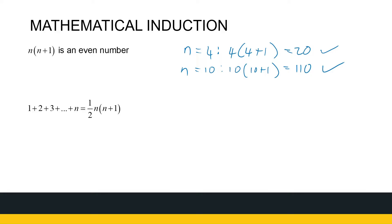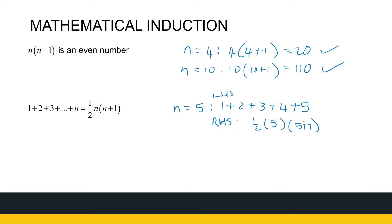If we look at the next statement: 1 plus 2 plus 3 all the way to plus n equals a half times n times n plus 1. For n equals 5, the left-hand side is 1 plus 2 plus 3 plus 4 plus 5, which equals 15. The right-hand side is a half times 5 times 6, which is also 15. So it works for n equals 5. But the question is, does it work for all natural numbers?